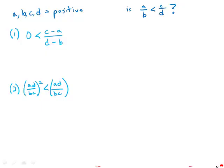If a, b, c, and d are positive numbers, is a over b less than c over d?